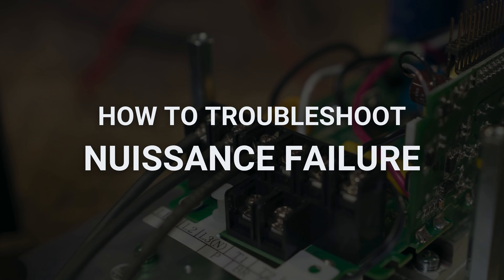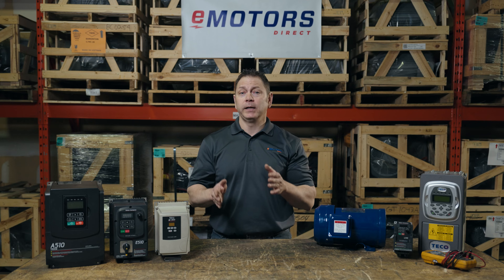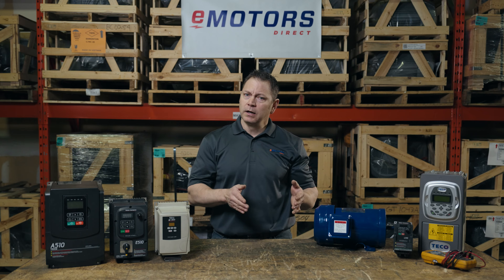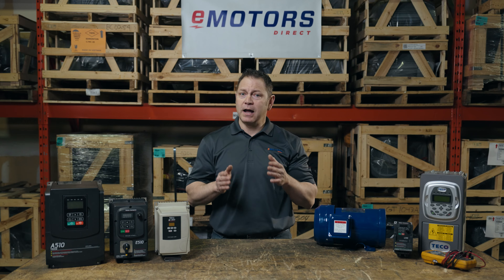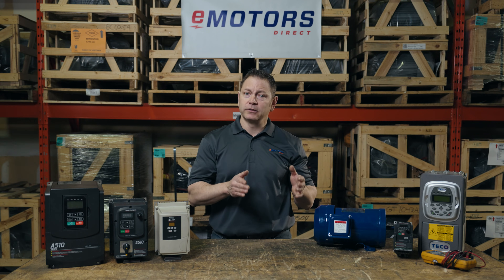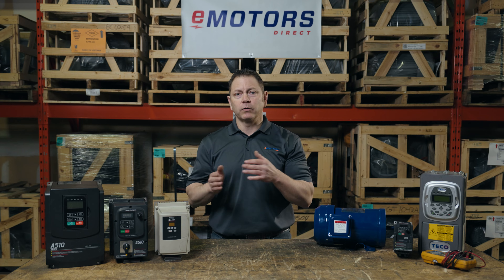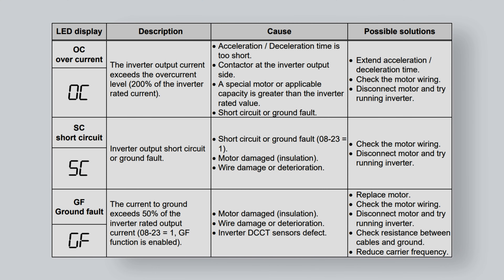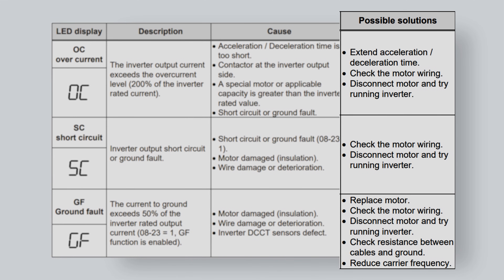Lastly, we'll look at nuisance failures — we'll be primarily looking at VFD fault codes. Check for active fault codes. If your drive has a display, it will show an error code. If your drive does not have a display, it will likely have a diagnostic LED that will blink or change color according to the error. Check your drive manual for a list of error codes or diagnostic LED states and follow the listed troubleshooting suggestions.